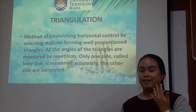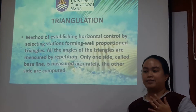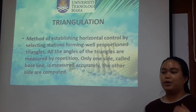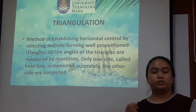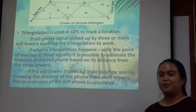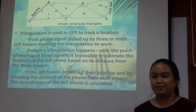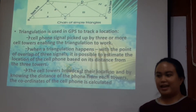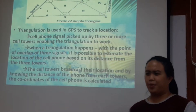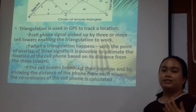Triangulation is used in GPS to determine a location. A phone signal is backed up by three or more cell towers, enabling triangulation to work. When triangulation happens, with the point of overlap of three sides, it is possible to estimate the location of the cell phone based on its distance from the three towers. From each tower, the coordinate of the cell phone is determined.